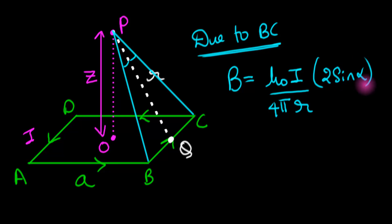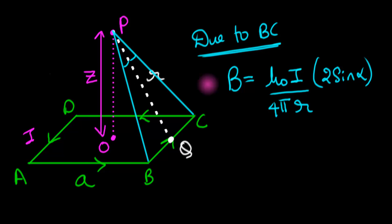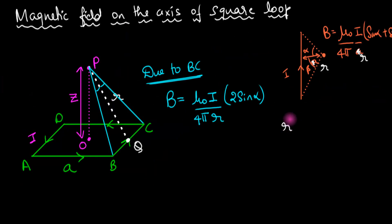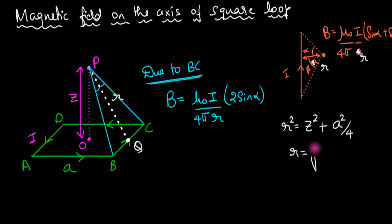R can be found by considering triangle OPQ. By the Pythagorean theorem: R² = Z² + OQ² = Z² + (A/2)² = Z² + A²/4. So R = √(Z² + A²/4).